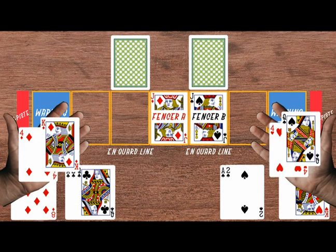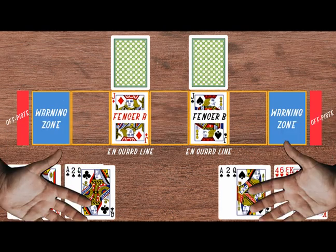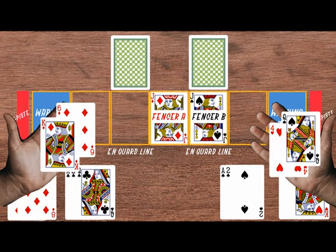However, if fencer B parries the attack in four, he creates an opening and scores a touch immediately with a riposte. Fencer A can choose to attack with a slower six instead, allowing her to avoid fencer B's parry in four, although she will be vulnerable to a faster attack in four herself.